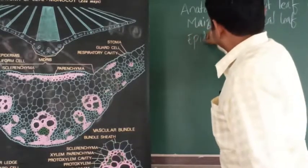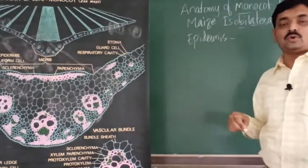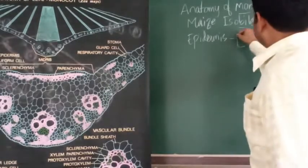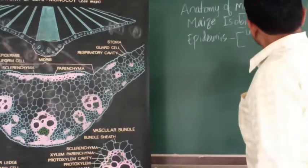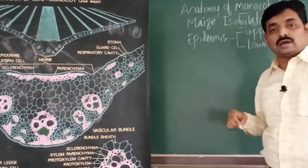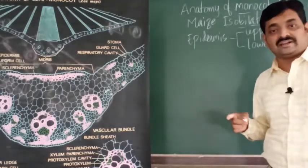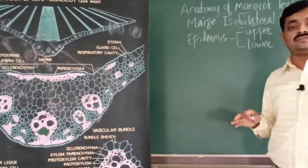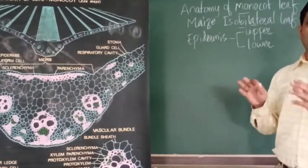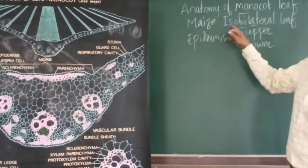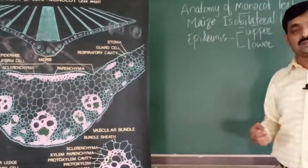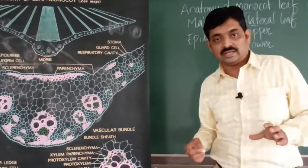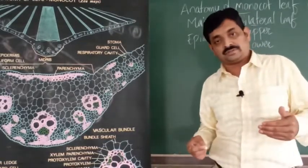The epidermis of monocot leaf is a single layer composed of parenchyma cells. It has two surfaces: upper epidermis and lower epidermis. Both upper and lower epidermis are a single layer, and they are identical — that's why the leaf is called isobilateral. Stomata are equally distributed on upper and lower epidermis.